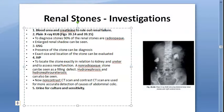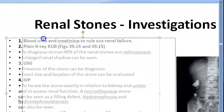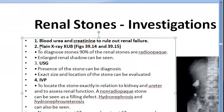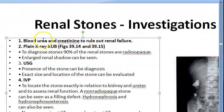For investigations, you first check blood urea and creatinine levels to rule out renal failure — to check if the kidney is failing or not.